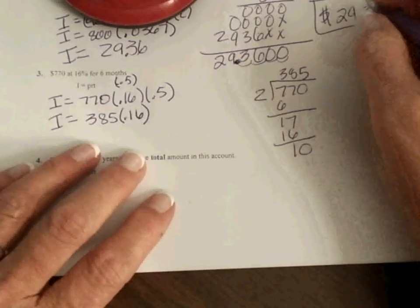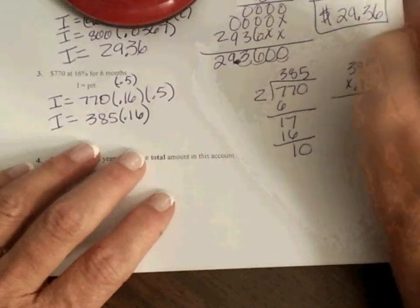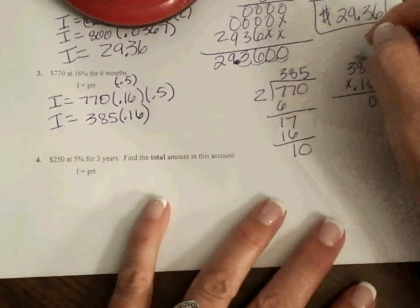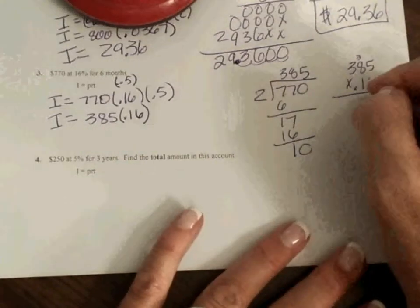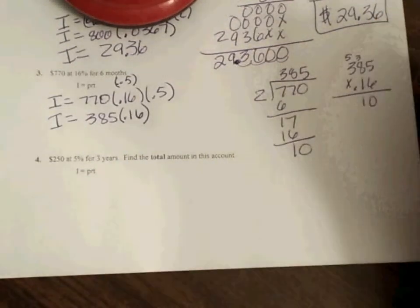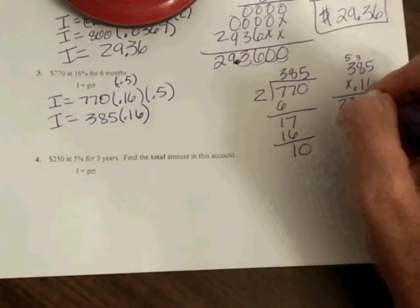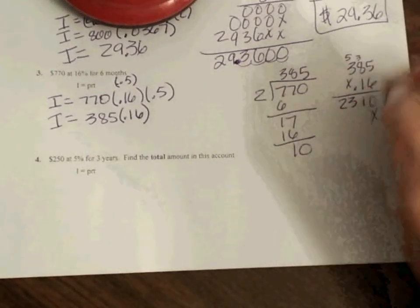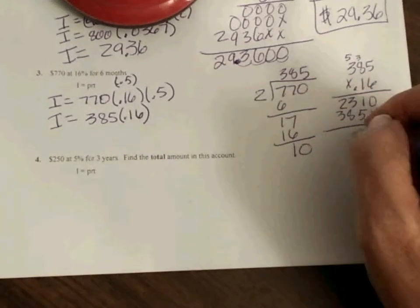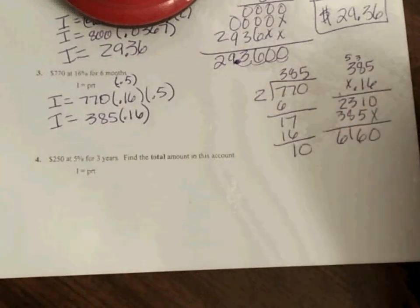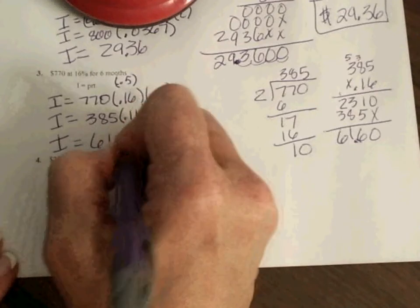Okay. So I'm going to come over here to do my math. 6 times 5 is 30. 6 times 8 is 48 for 9, 50, 51. 6 times 3 is 18, 19, 20, 23, and then 5, 8, 3. So I have $61.60.